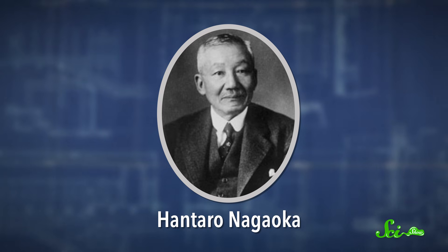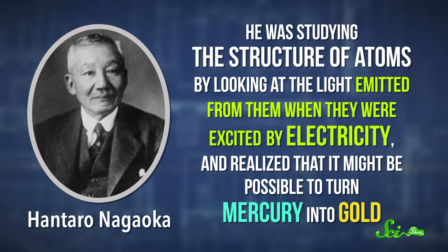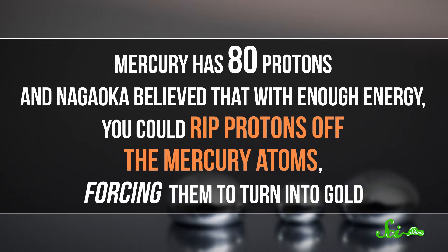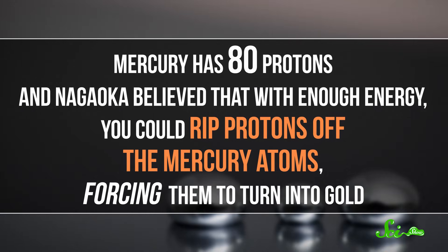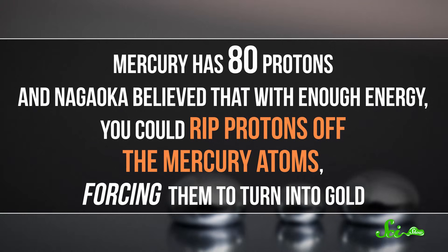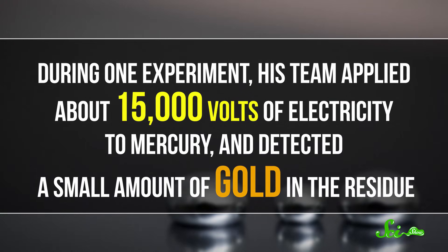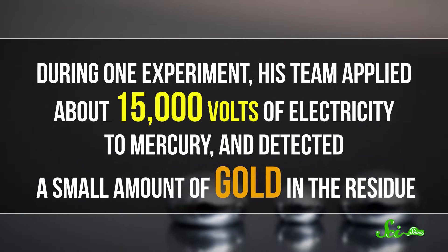But creating gold was another matter entirely. In 1923, Japanese physicist Hantaro Nagaoka was studying the structure of atoms by looking at light emitted from them when they were excited by electricity, and realized that it might be possible to turn mercury into gold. Mercury has 80 protons, just one more than gold, and Nagaoka believed that with enough energy, you could rip protons off the mercury atoms, forcing them to turn into gold. During one experiment, his team applied about 15,000 volts of electricity to mercury, and detected a small amount of gold in the residue.